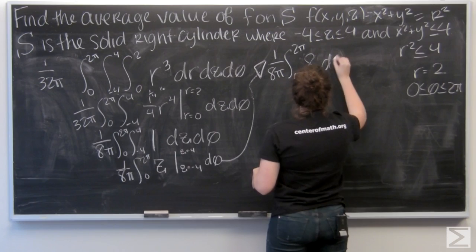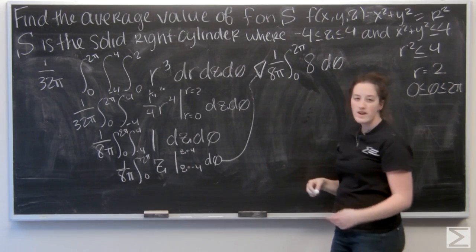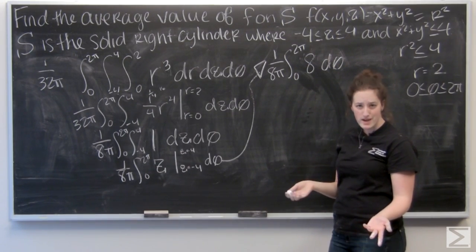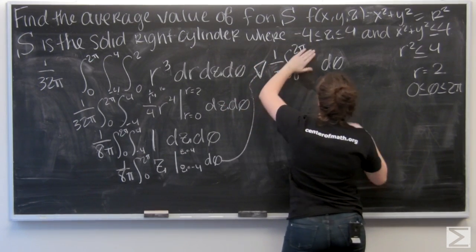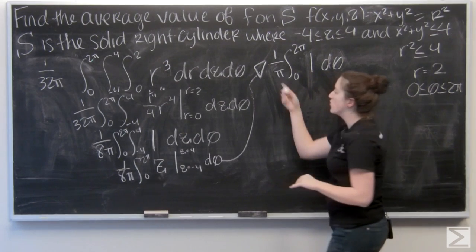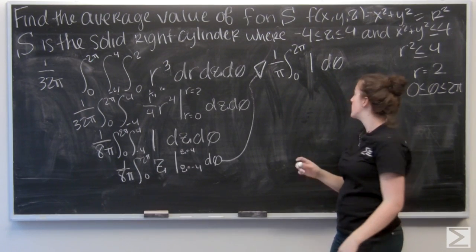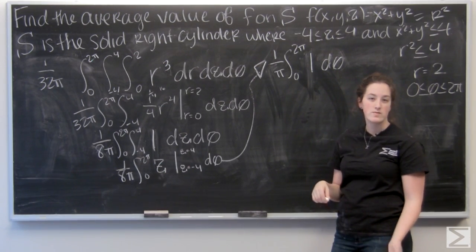And then I just have to integrate with respect to theta. Well, now I have a 1 eighth and an 8, so I can cancel those out pretty easily. So now I'm left with 1 over pi times the integral of d theta from 0 to 2 pi.